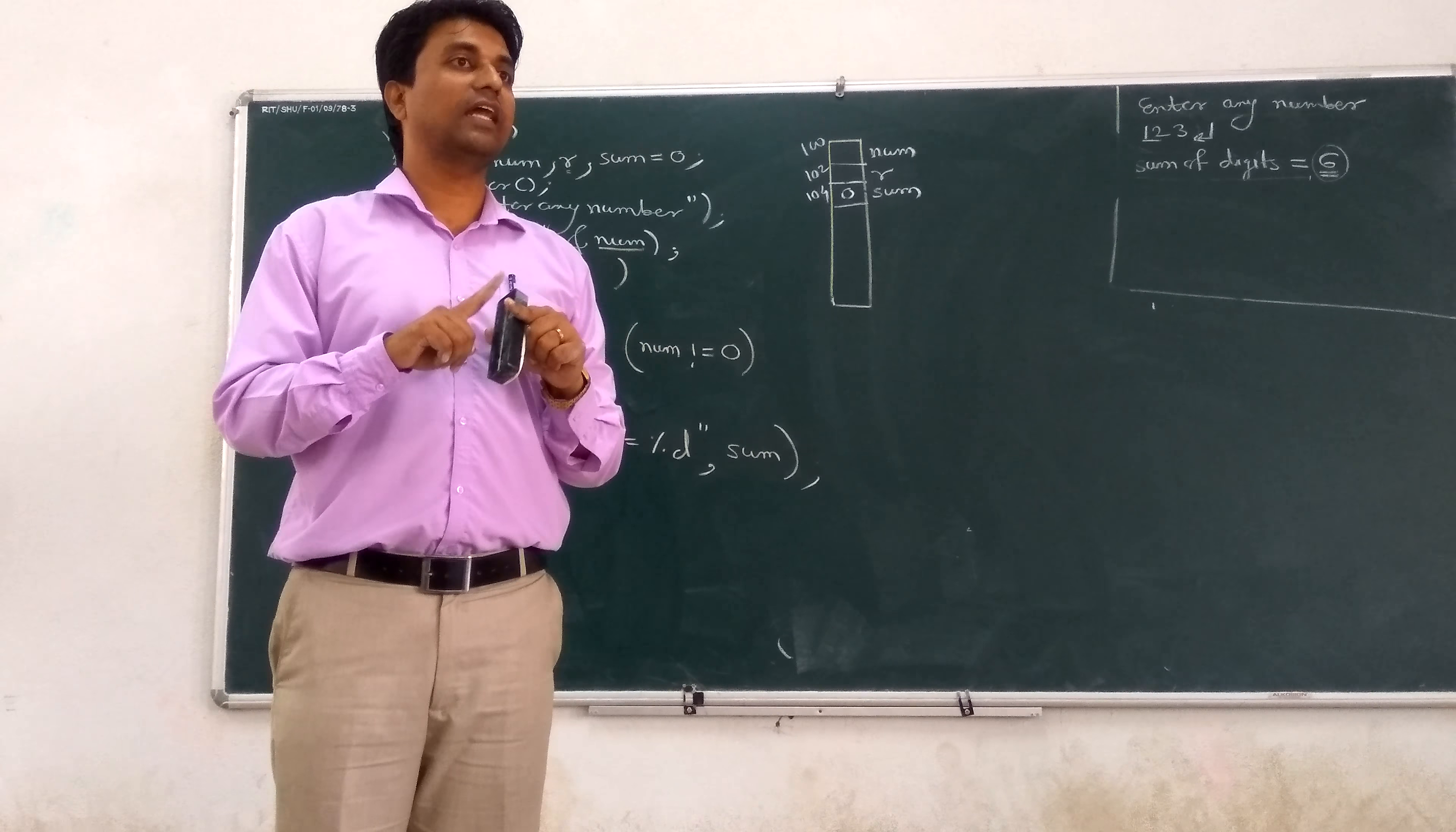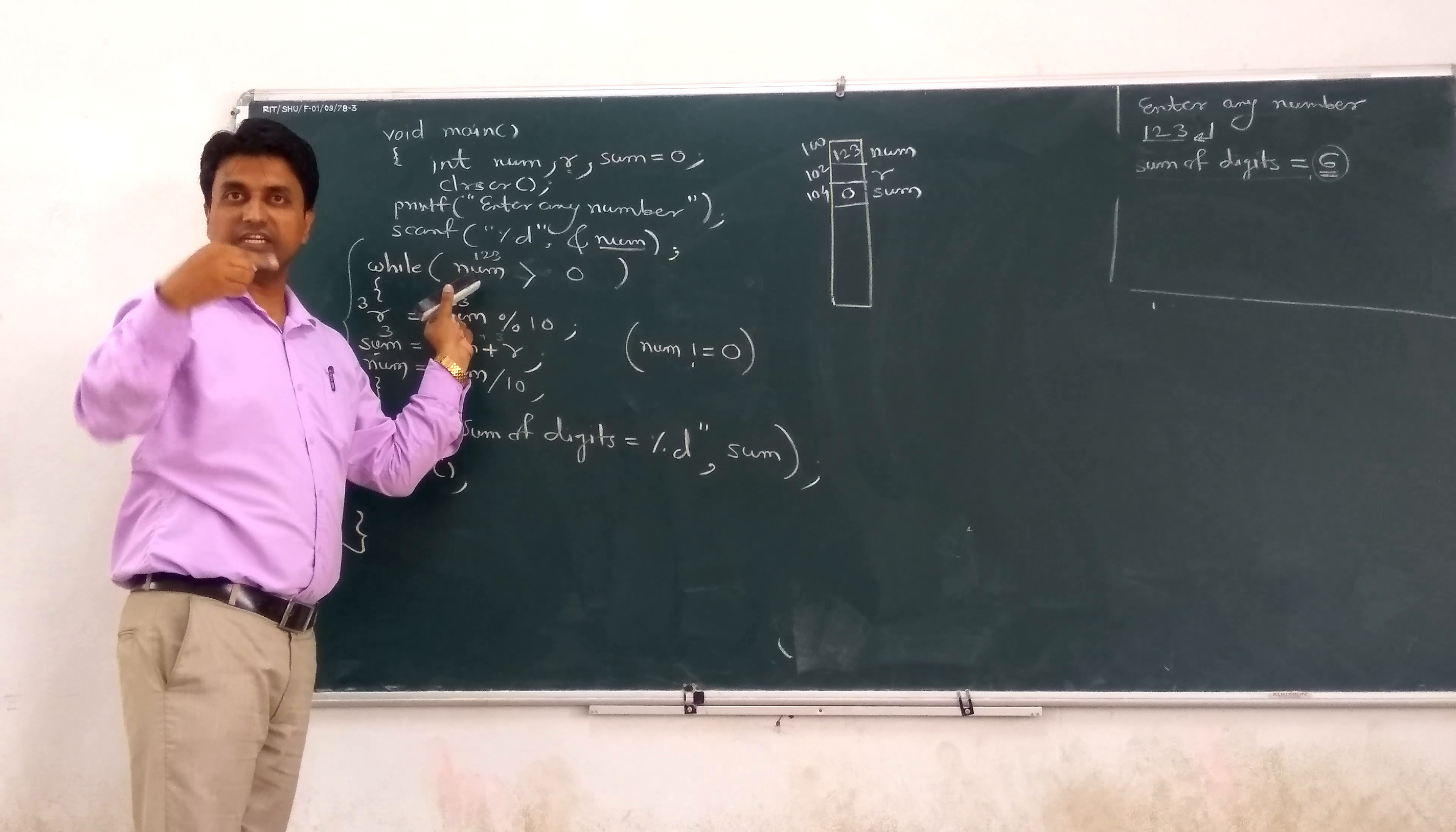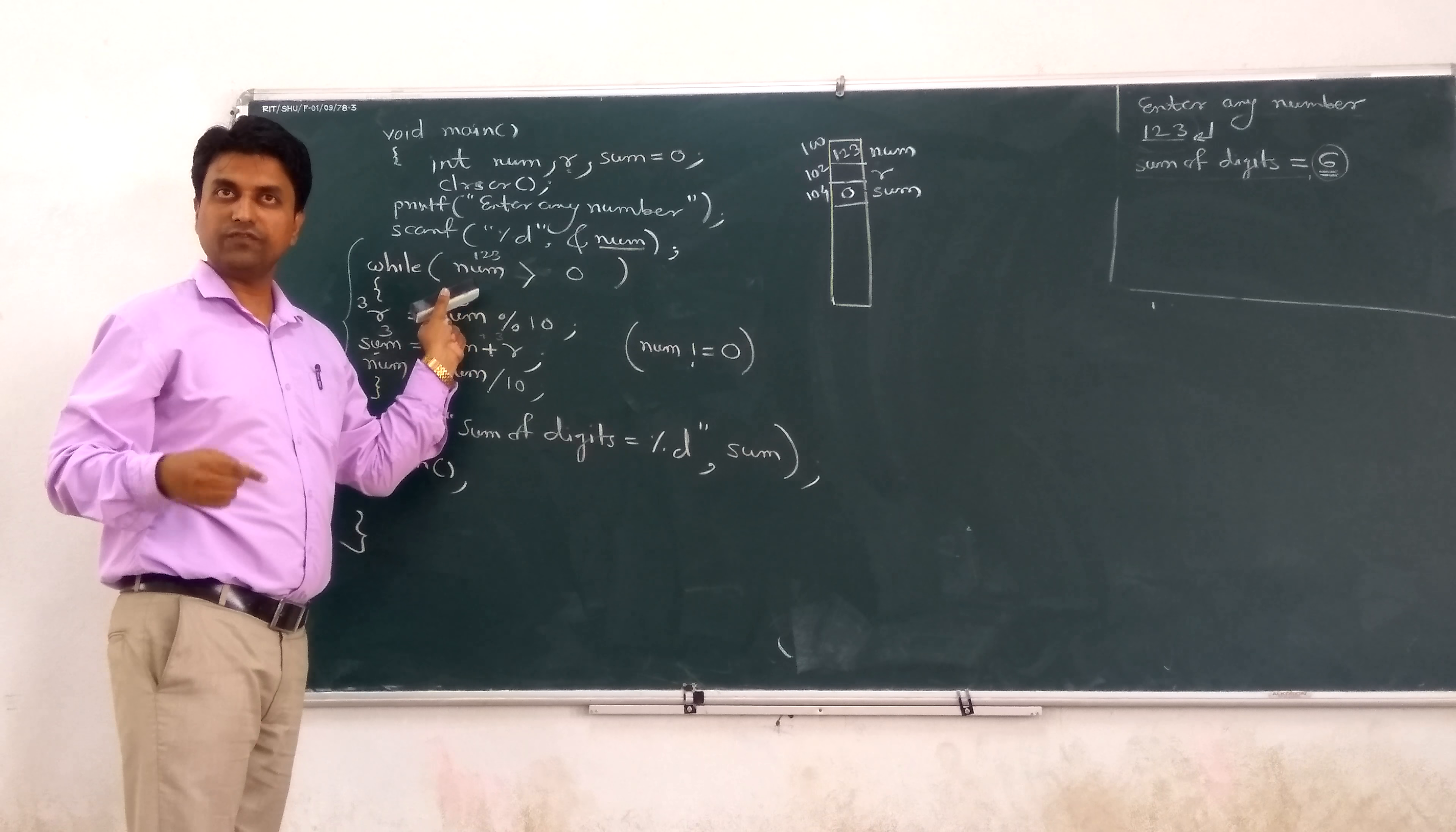Whatever may be the garbage value is overwritten by 123. Now what is the number? 123. Fetch the current value from the variable, whatever may be the current value in the RAM that is placed.